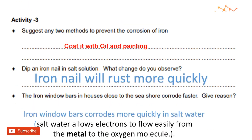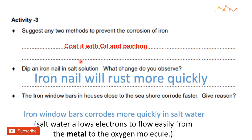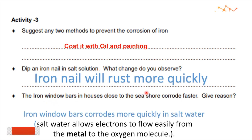Any two methods to prevent corrosion of iron: iron corrosion prevention methods include protection from salt water, as salt water accelerates corrosion of iron.